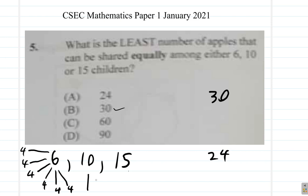With 10 children, you would not be able to share 24 equally. If you give two each, that's only 20; if you give three each, that's 30 — so it doesn't work. If you try with 15 children: giving one each is only 15, not 24; giving two each would be 30, which passes 24. So 24 does not work.